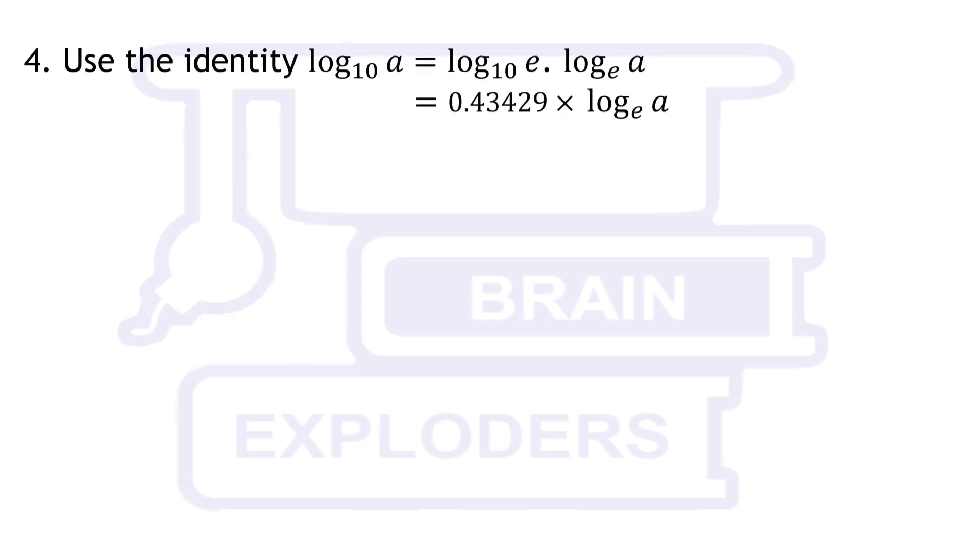Since the expansion can be applied on natural log, therefore we have to rewrite these terms such that there is exponential coefficient e at their base. For this we will use the identity log a at the base 10 equals to log a at the base e times log e at the base 10.